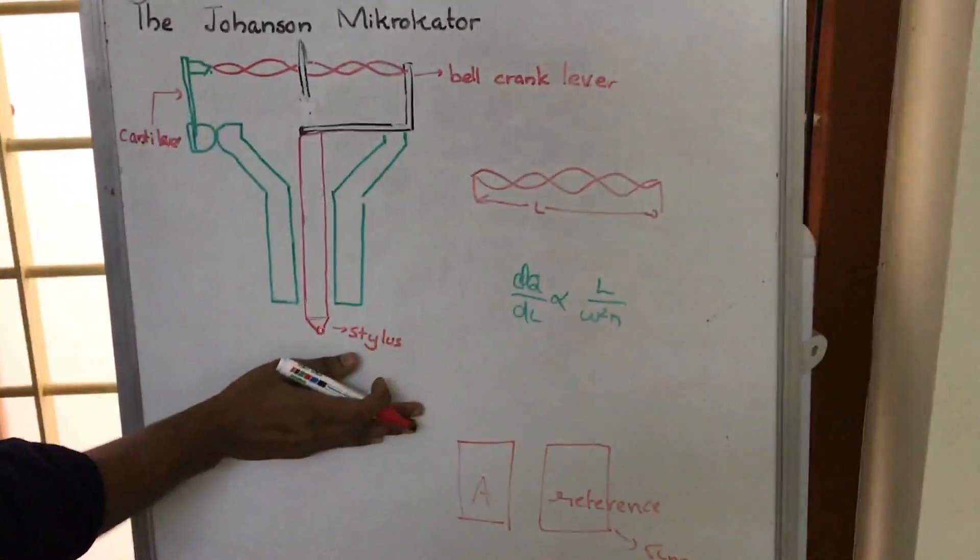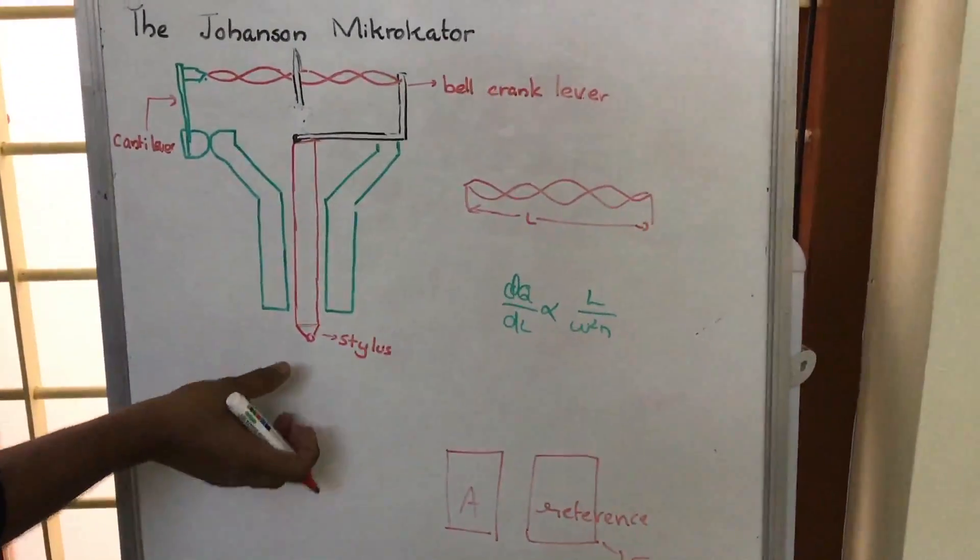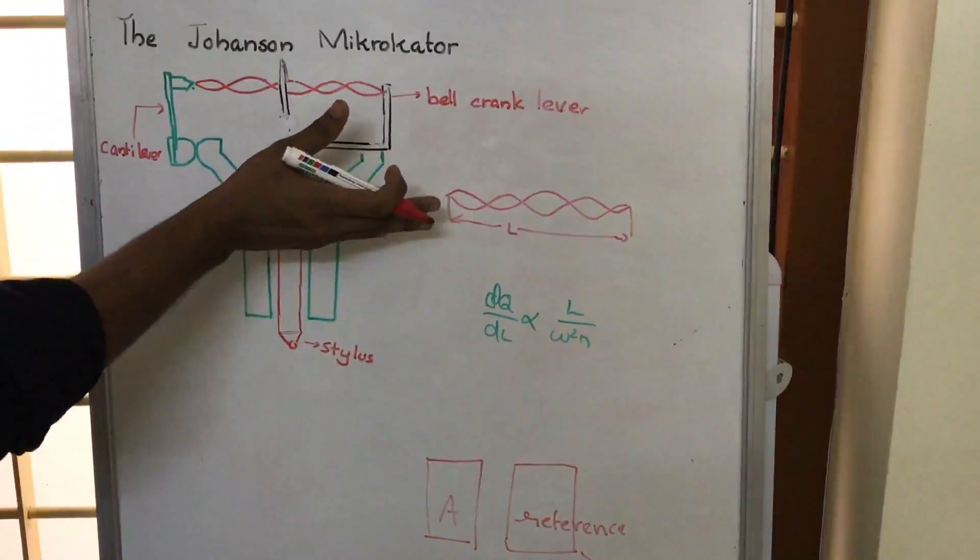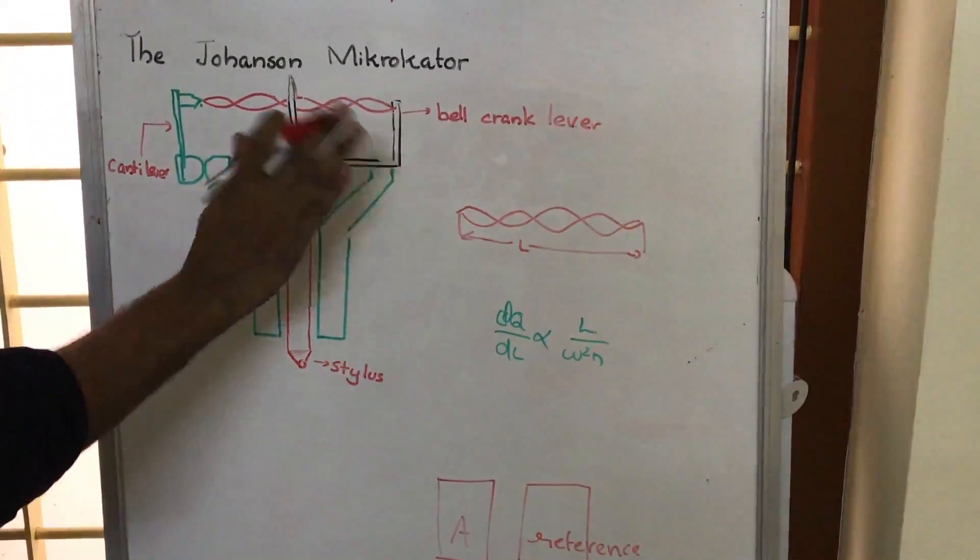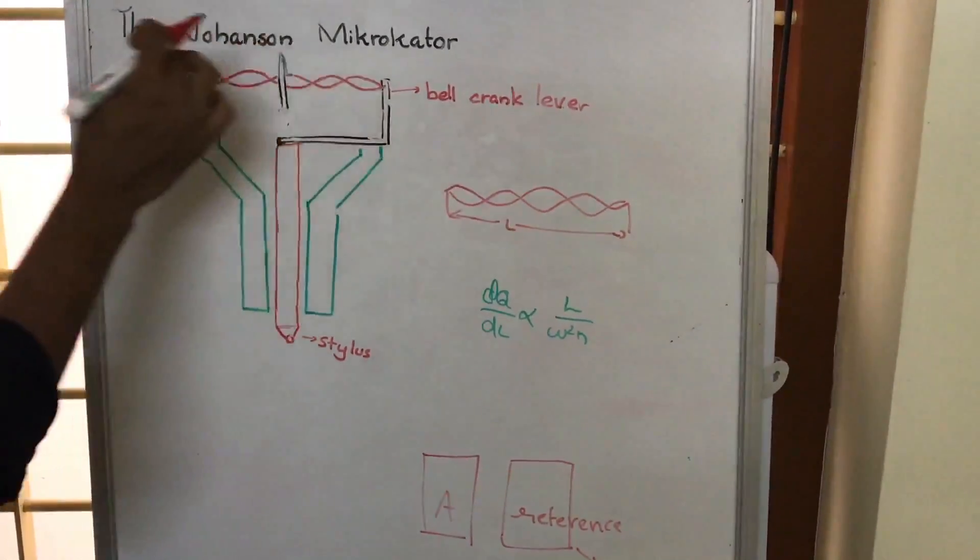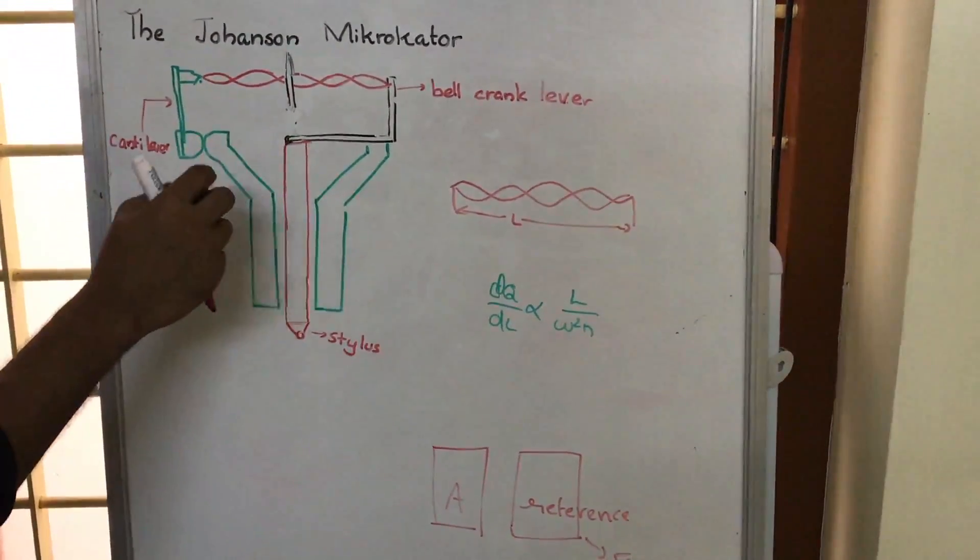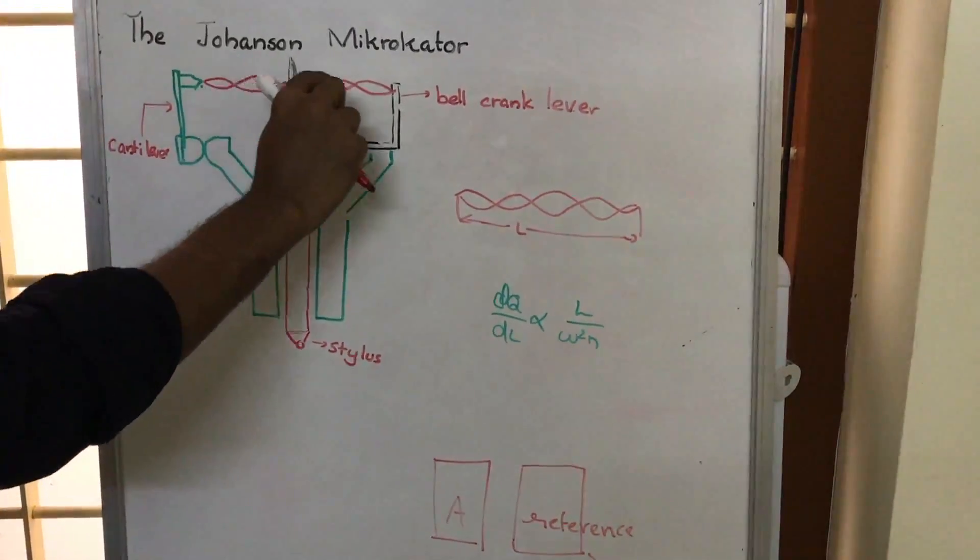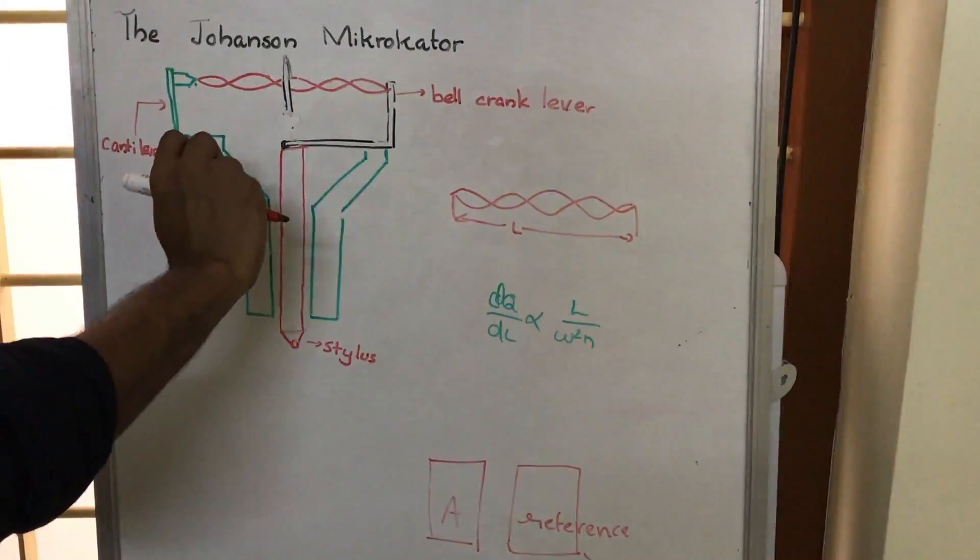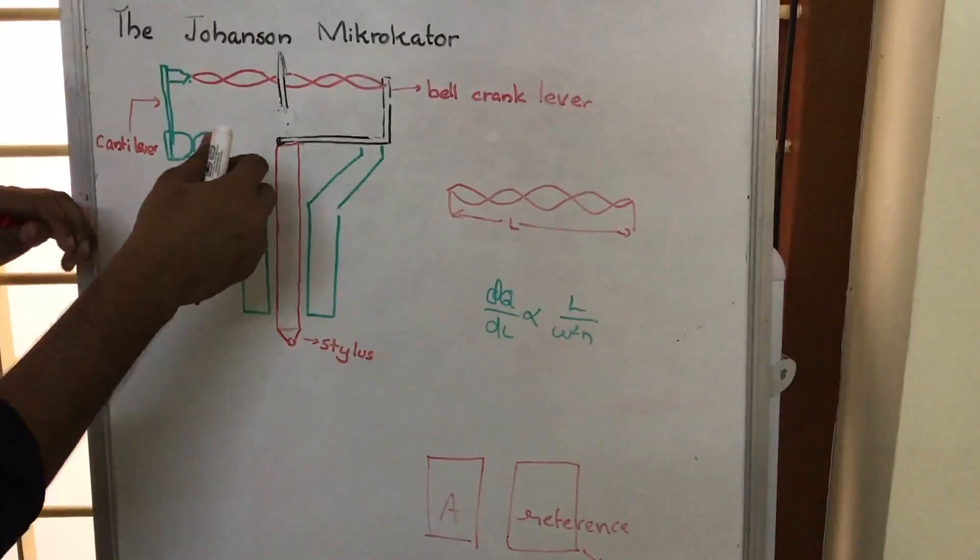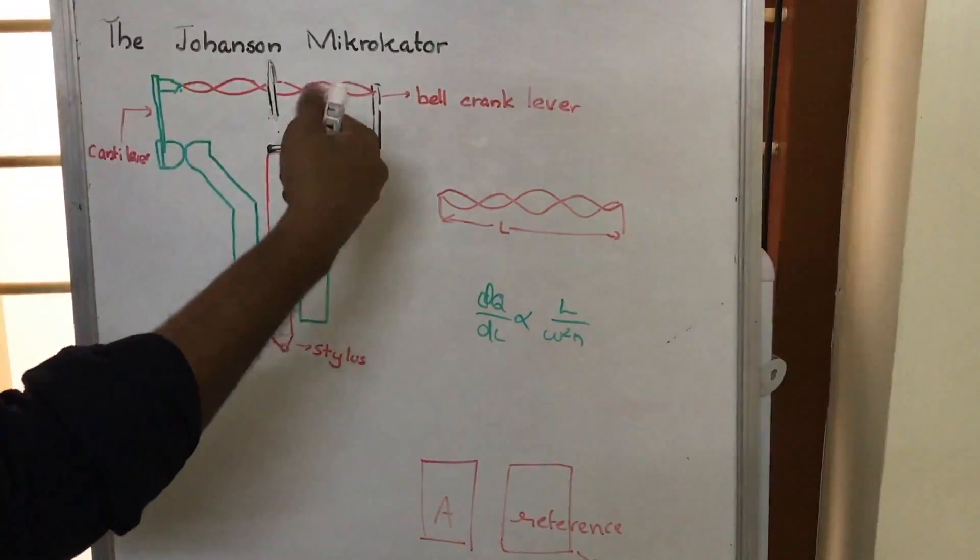Suppose that on placing the reference, if the stylus moves upwards, this bell crank lever will move in the clockwise direction. Because this arm moves clockwise, this twisted strip will